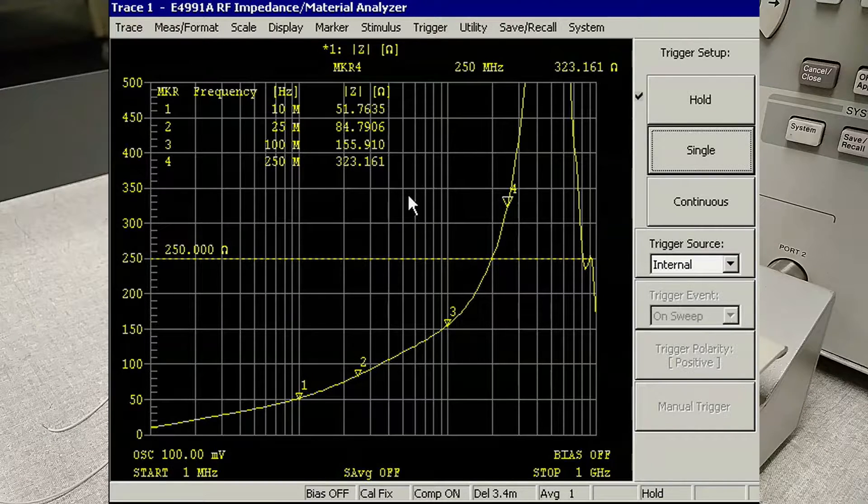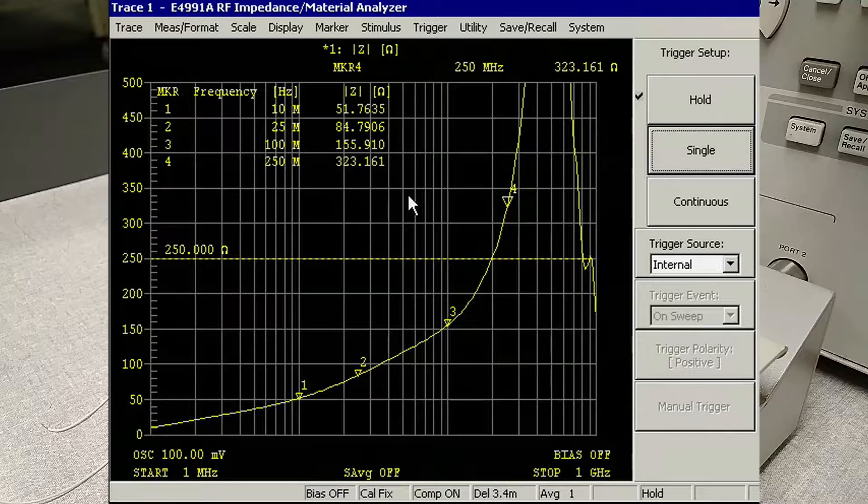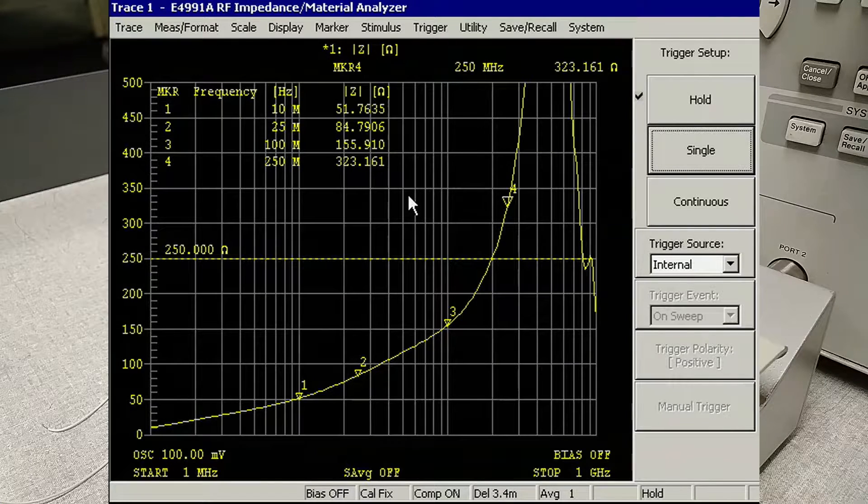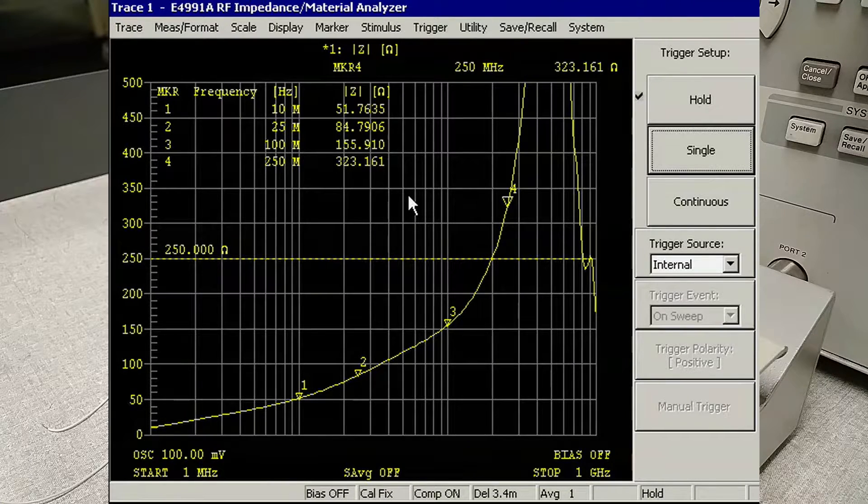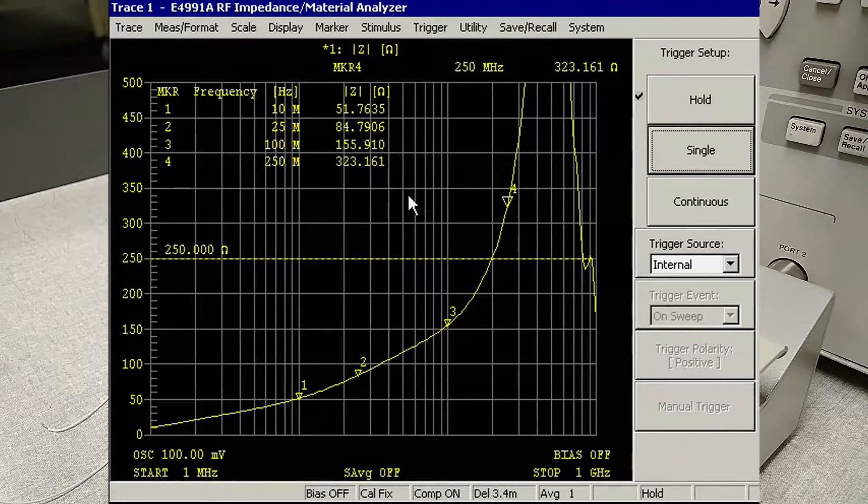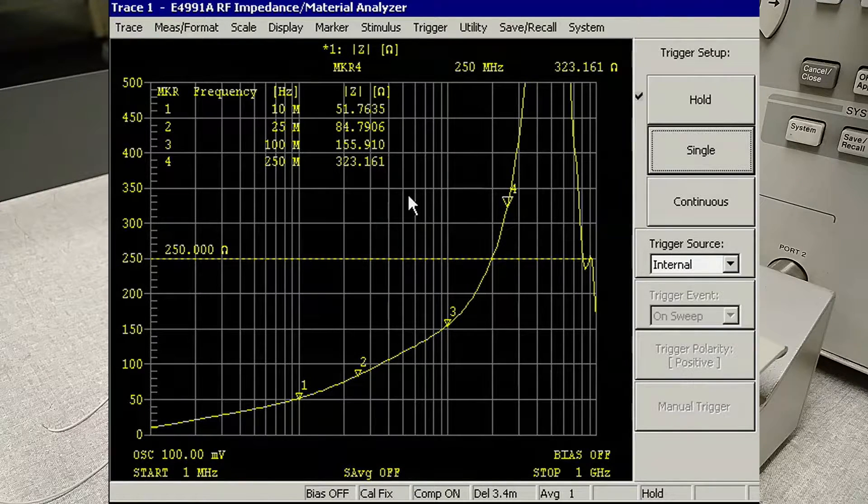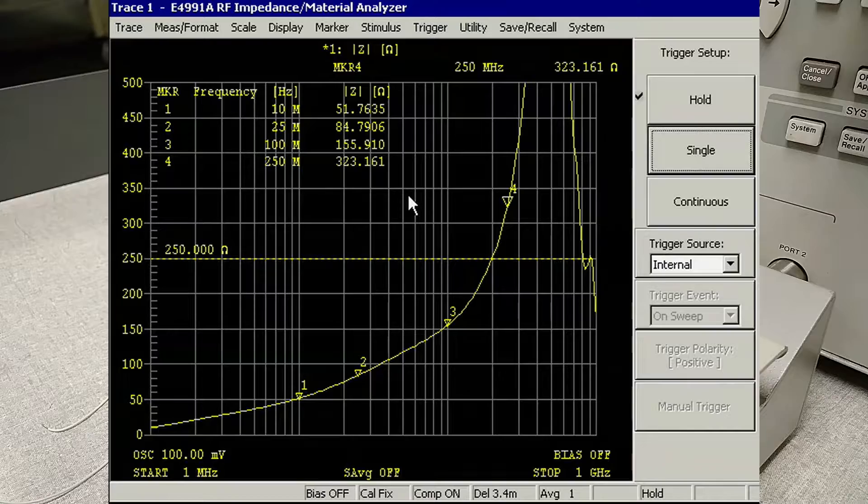We're increased at 10 megahertz a fair amount. 25 megahertz we're up over 10 ohms from where we were originally. The 100 megahertz we had about a 50% gain from what we originally had measured. And at 250 megahertz we're more than triple our original values.